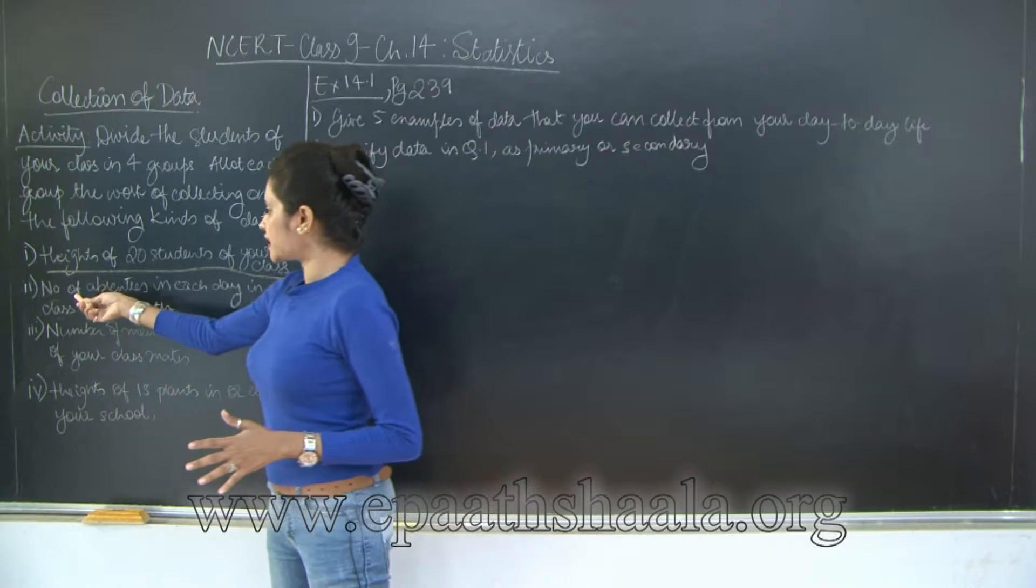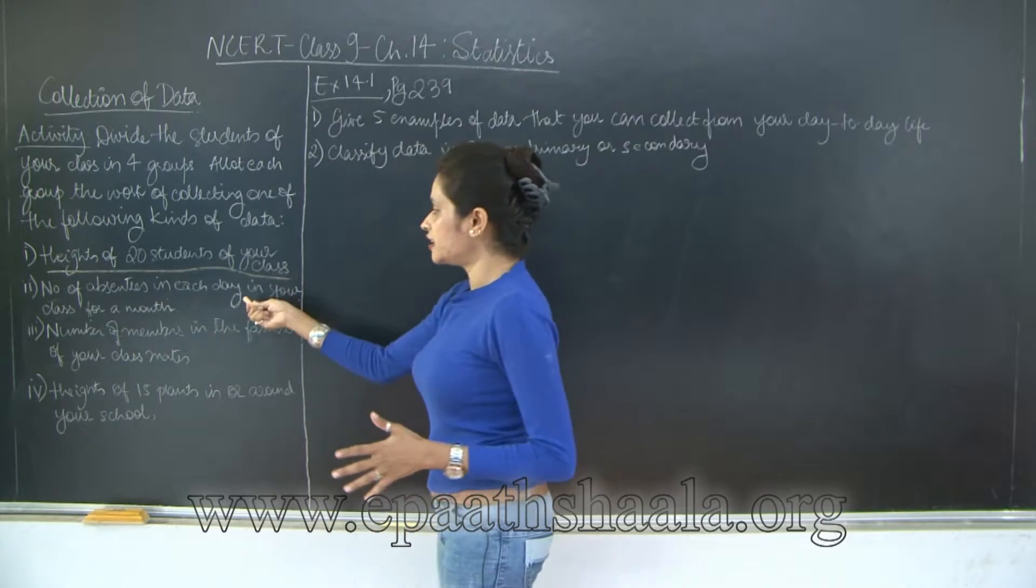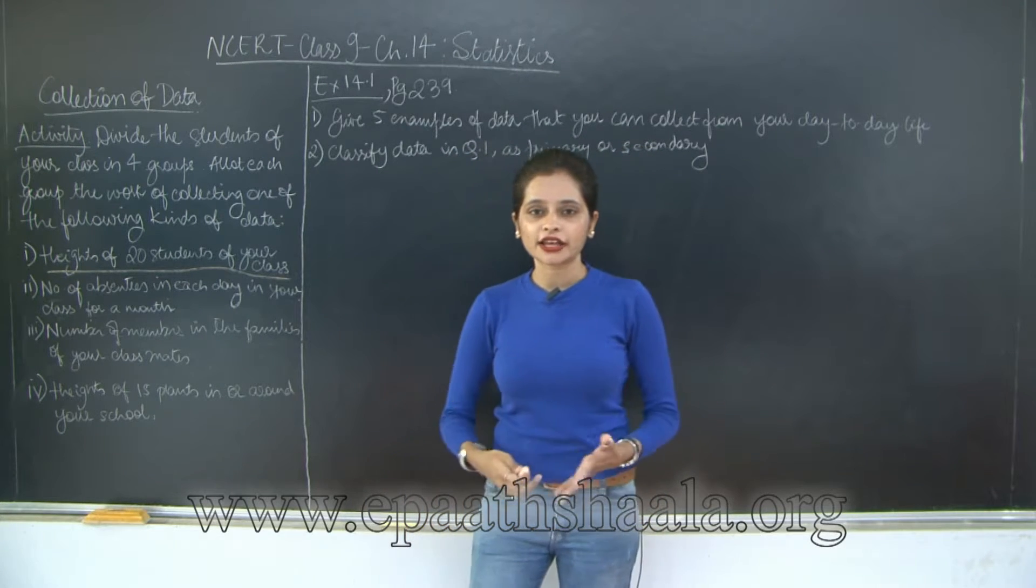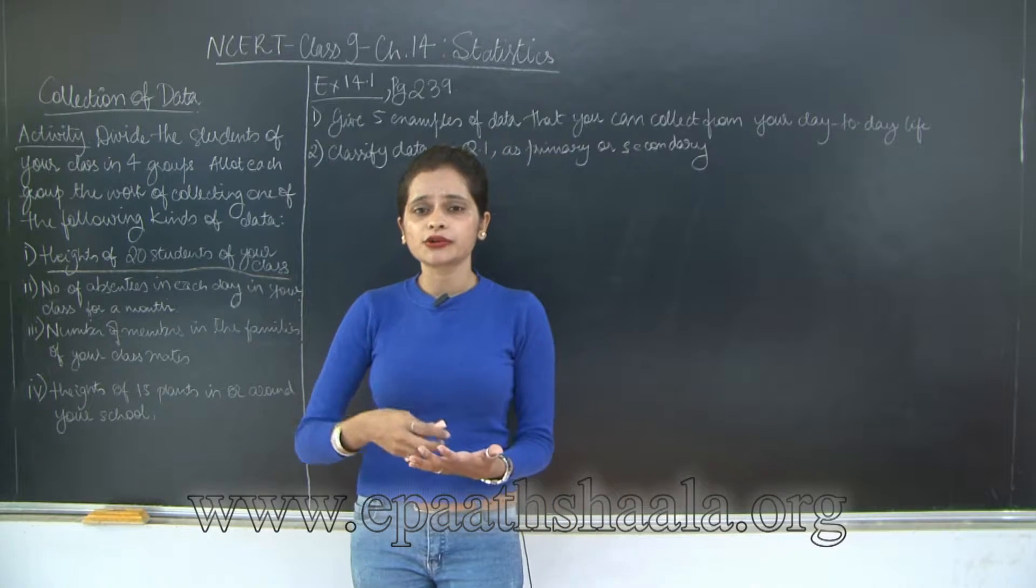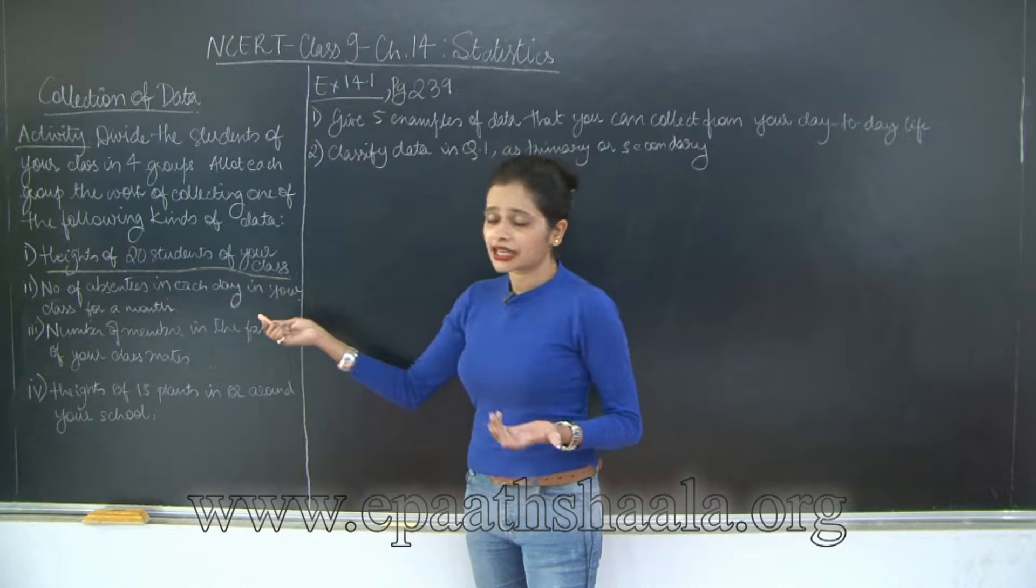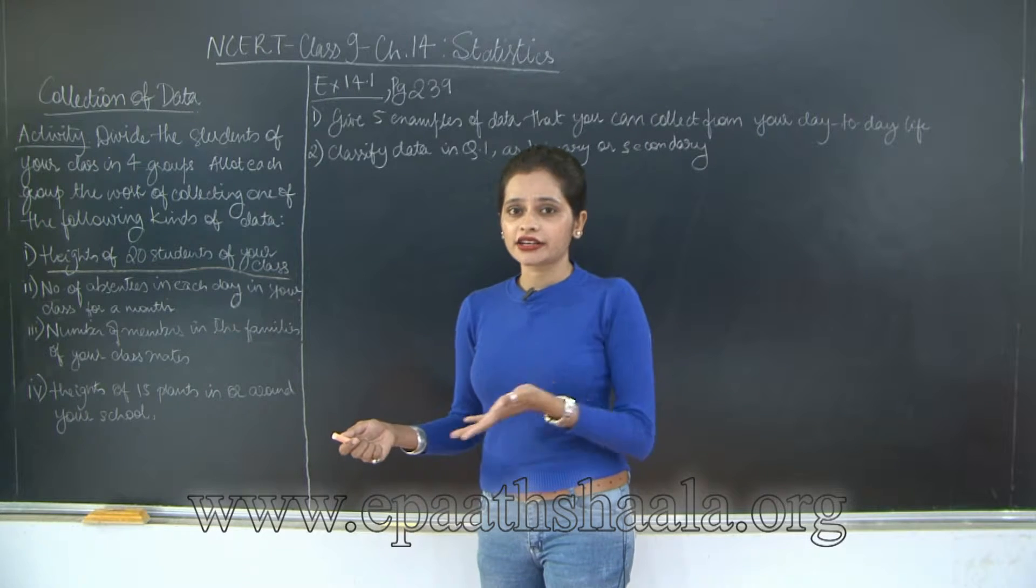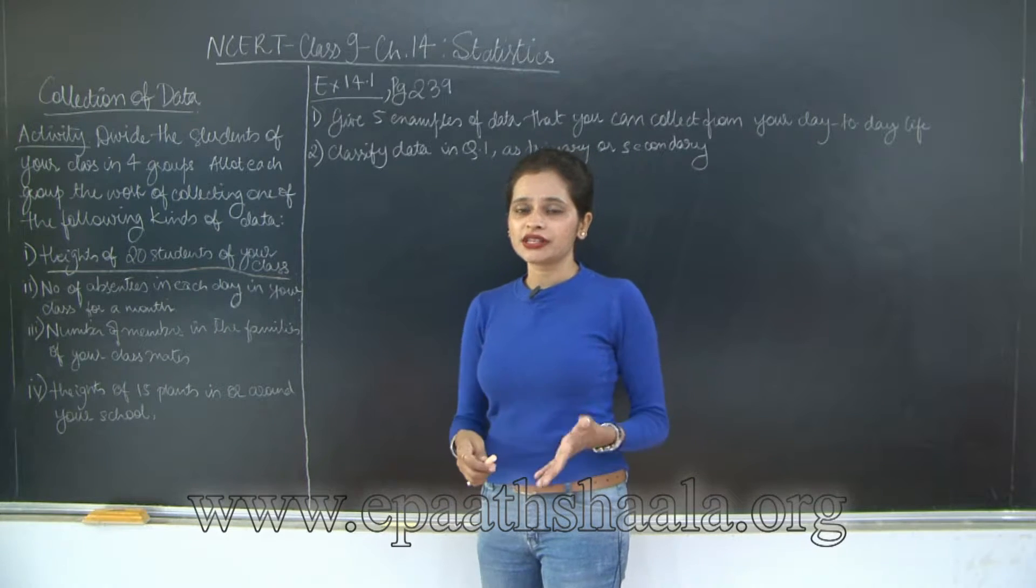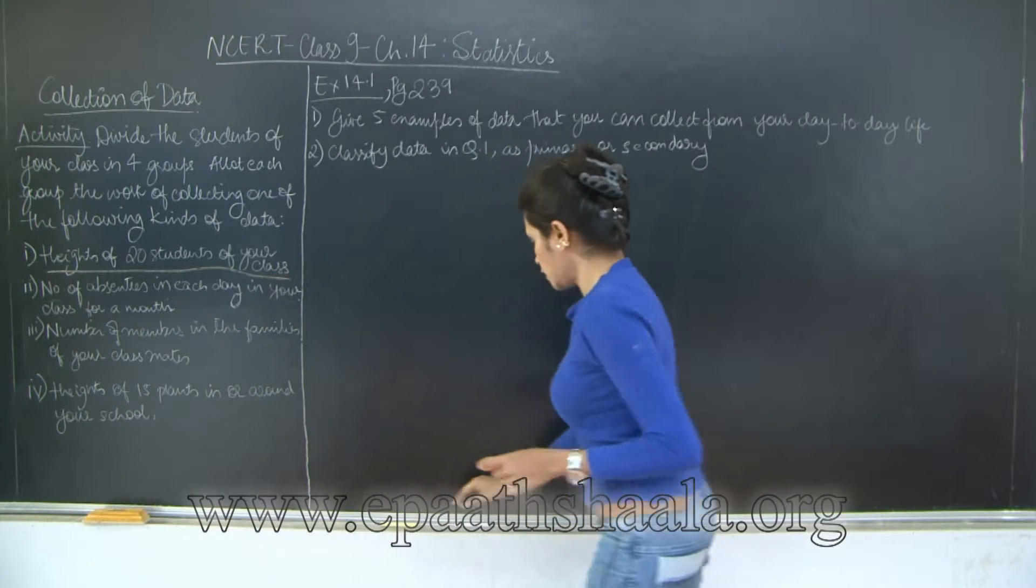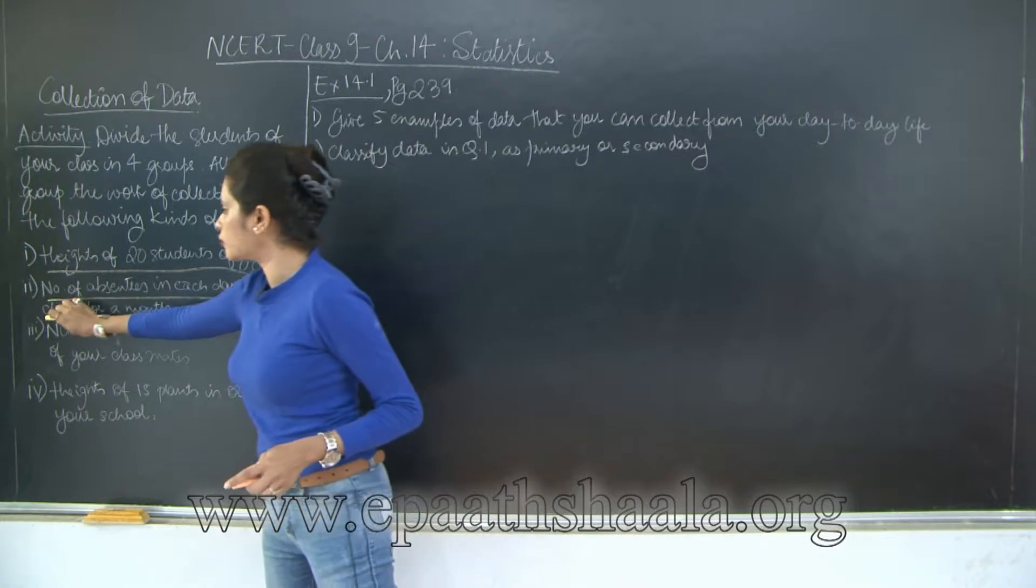Now moving on to the second one: number of absentees each day in your class for a month. Do you think if you just got the activity in the midst of the month and have to submit records by tomorrow, would it be possible to approach each and every student? You won't even be certain whether they've taken leave or not. So what are you going to do? You're going to take a look at the log book which maintains the record. This will come through some source, which could be the register or log book. I'm marking this with a yellow colored chalk.